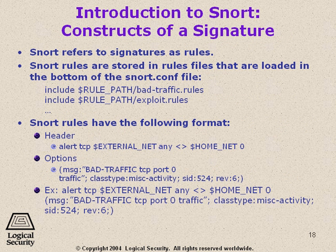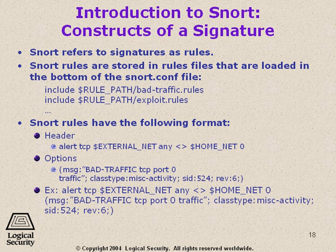The construct of a signature — what do signatures look like? Snort refers to signatures, which are the patterns we're looking for on the network, as rules. Snort rules are stored in rules files and loaded at the bottom of the snort.conf configuration file. They look something like: include rule-path bad-traffic.rules, include rule-path exploit.rules. That rule path is a variable that points to the rules folder, and those are different types of rules.